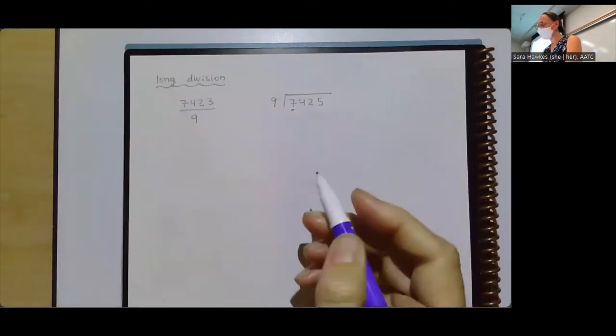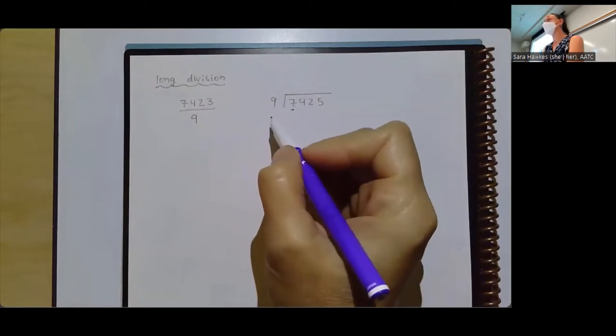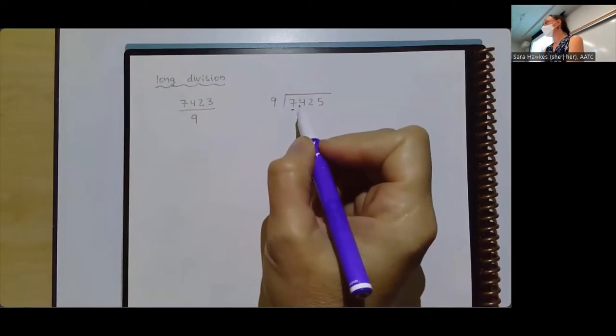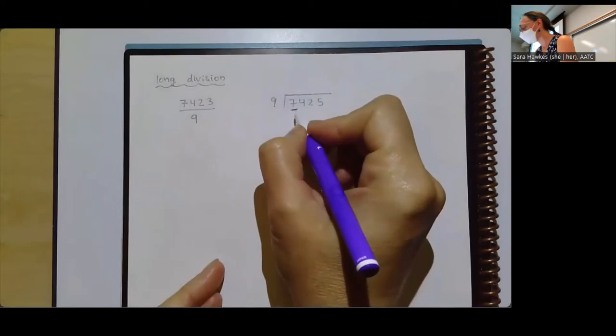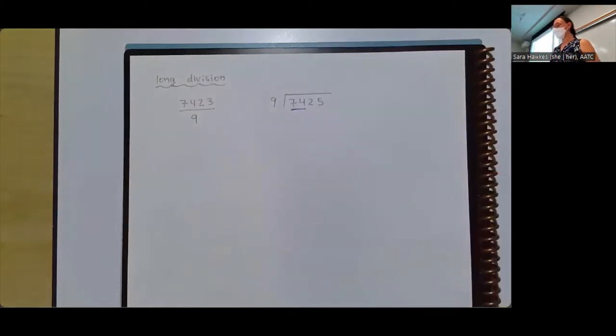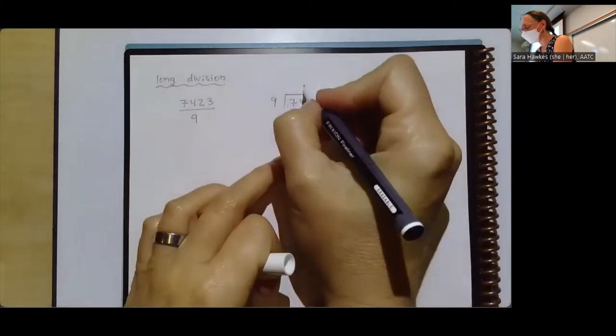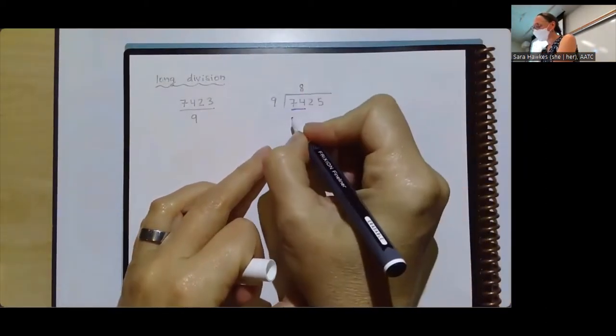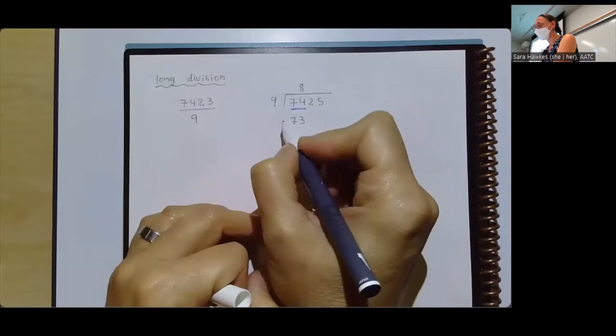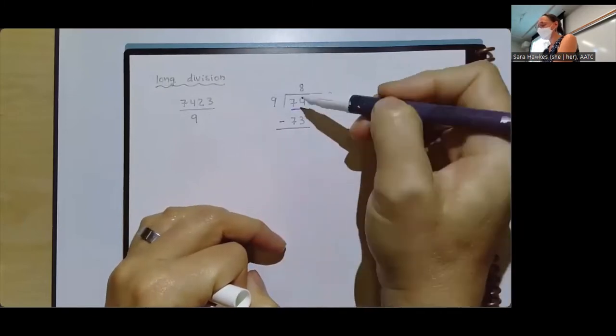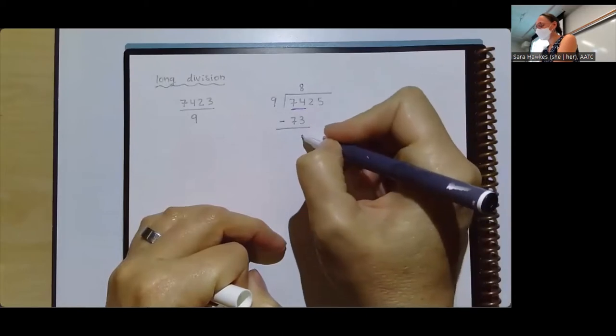So if I start with the seven, nine times even just a one is already too big. So there is no number that I can multiply nine by without going over. So instead, I'm going to look at the first two as a pair. So I want to get as close to 74 as I can without going over. Nine times what is going to give me that? I'll take it from the chat. Thank you. We got an eight in the chat. So nine times eight is 73. So I multiply this down here, I'm going to write it underneath and subtract it off. 74 minus 73 leaves me with a one.